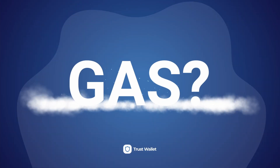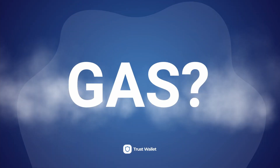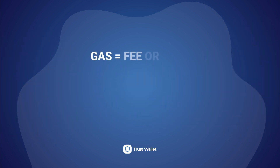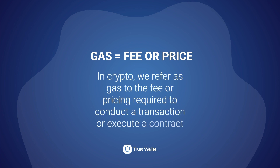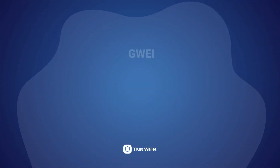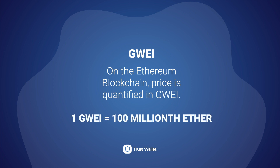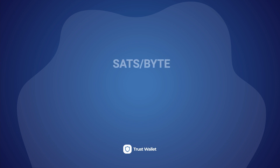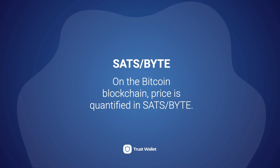Gas prices — for cryptocurrency? Gas refers to the fee or pricing value required to successfully conduct a transaction or execute a contract on the Ethereum blockchain. This price is quantified in GWEI, which is just a subunit equal to 100 millionth of an Ether. It's easier to say gas costs 50 GWEI than 0.00000005 Ether. Likewise, the Bitcoin blockchain also has its specific network fee unit of measurement, which is called sats per byte.